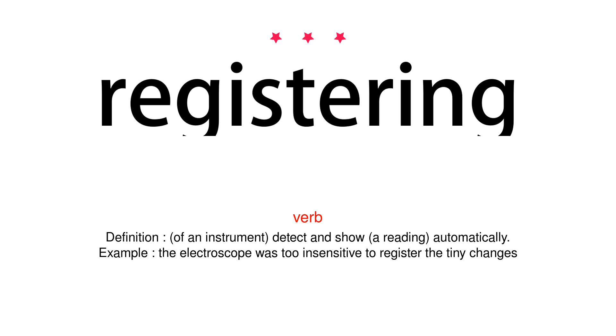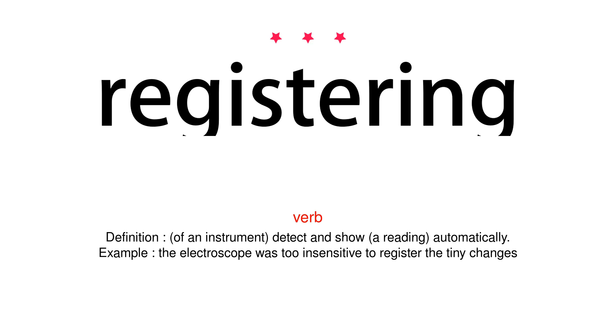Verb. Definition: of an instrument, detect and show a reading automatically. Example: the electroscope was too insensitive to register the tiny changes.